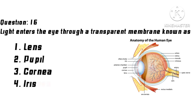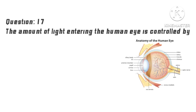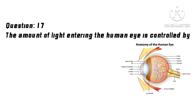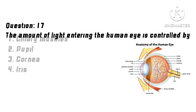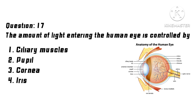Question 16: Light enters the eye through a transparent membrane known as? Options: 1. Lens, 2. Pupil, 3. Cornea, 4. Iris. Correct answer: 3. Cornea.